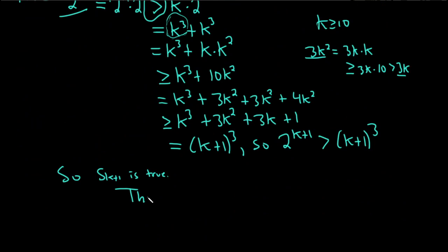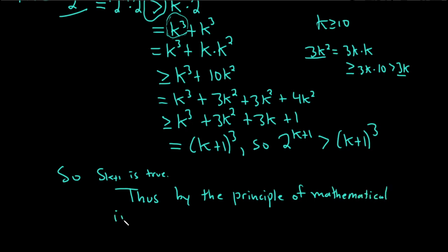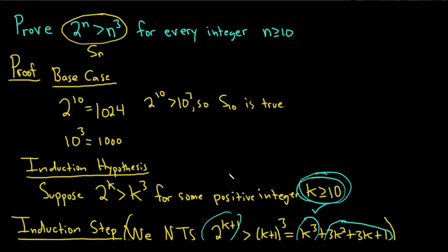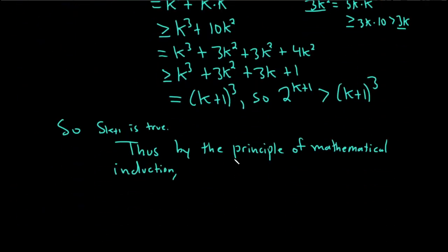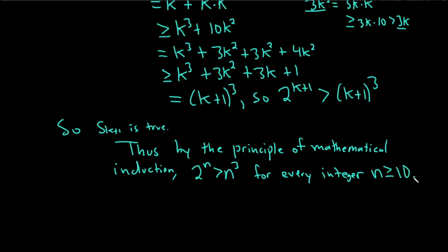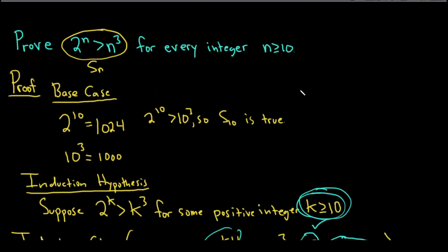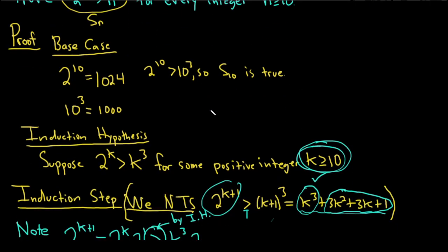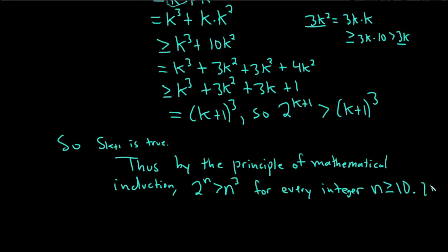Thus, by the principle of mathematical induction, we have that 2 to the n is greater than n cubed for every integer n greater than or equal to 10. That was the original statement. QED.